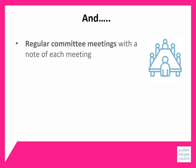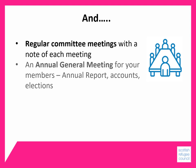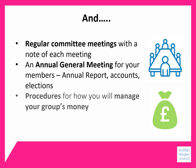You'll also need to have regular committee meetings, usually once a month, and to take a written note of each meeting. You'll need to have an annual general meeting for your members at least once a year, where you present your annual report and accounts and where members elect the committee. And very importantly, you'll need procedures for managing your group's money — Module 7 can help you with this.